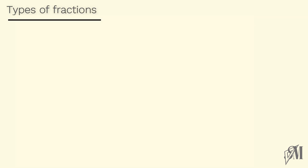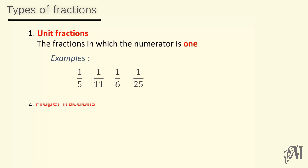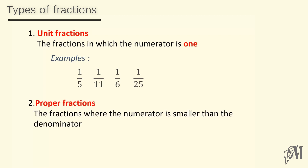First, let's see what are the types of fractions. Unit fractions: the fractions in which the numerator is 1 are called unit fractions. Here are some examples. The next type of fractions is proper fractions.